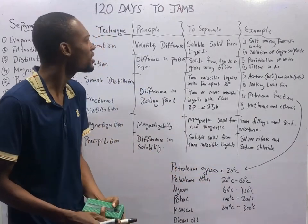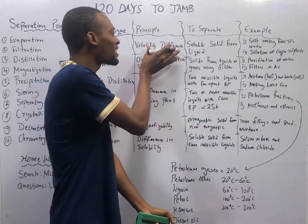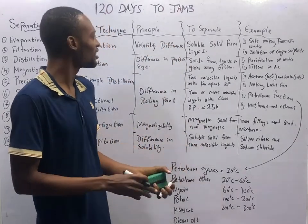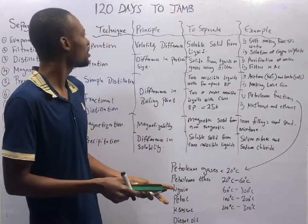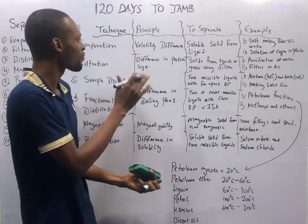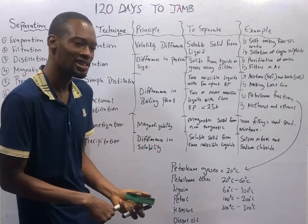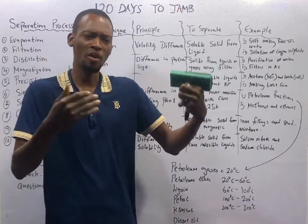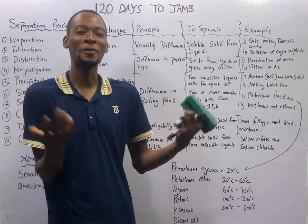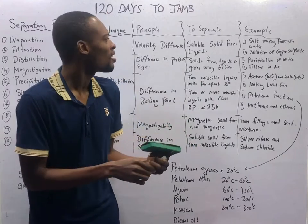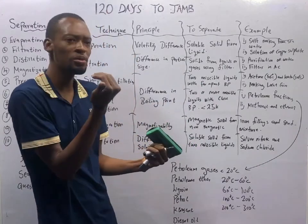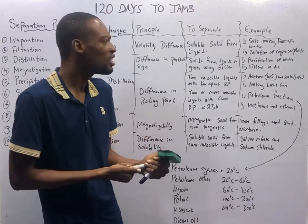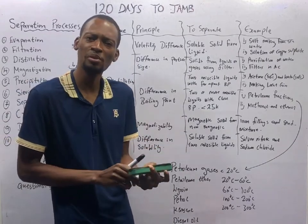Evaporation operates on the principle of volatility difference. When there is a difference in volatility, we employ evaporation. Volatility is simply the property of a substance to escape, evaporate, or disappear when heated. Evaporation is used to separate solute from solution if the solute does not decompose on heating.